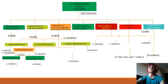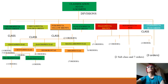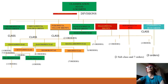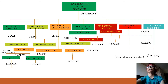The Pyrrophyta division is grouped into three classes: Cryptophyceae, Desmokontae, and Dinophyceae. Cryptophyceae has one order and Dinophyceae has seven orders. Euglenophyta is placed in one class, Euglenophyceae, comprising two orders. Division Phaeophyta is divided into three classes: Isogeneratae, Heterogeneratae, and Cyclosporae.